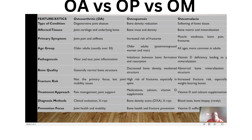In terms of the type of condition: osteoarthritis is a degenerative joint disease, whereas osteoporosis normally leads to bone density reduction. On the other hand, osteomalacia results in softening of the bone tissue.